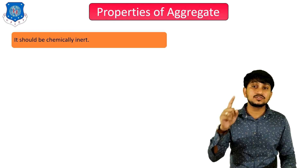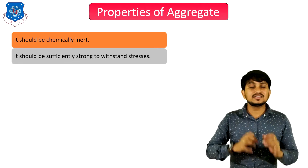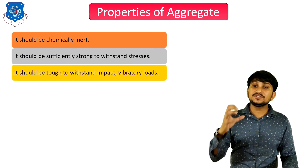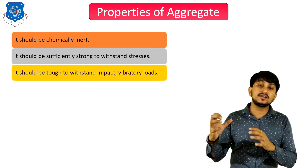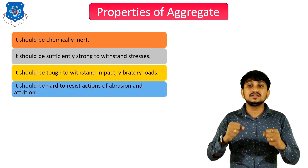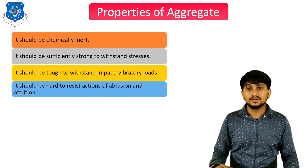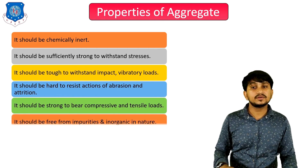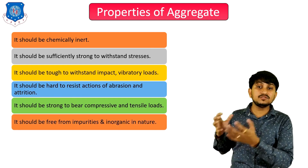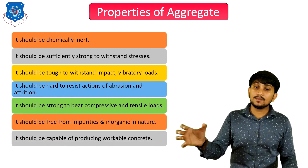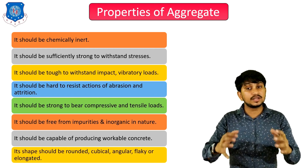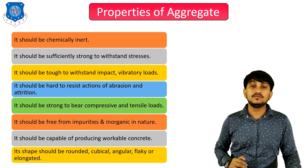Properties of aggregates: it should be chemically inert and not react with any other materials. It should be sufficiently strong to withstand various loads and stresses. It should be tough to withstand impact and vibratory loads. It should be hard to resist abrasion or attrition. It should be strong enough to bear compressive as well as tensile loads. It should be free from impurities and inorganic in nature. It should be capable of producing workable concrete. Its shape should be rounded, cubical, angular, flaky, or elongated.